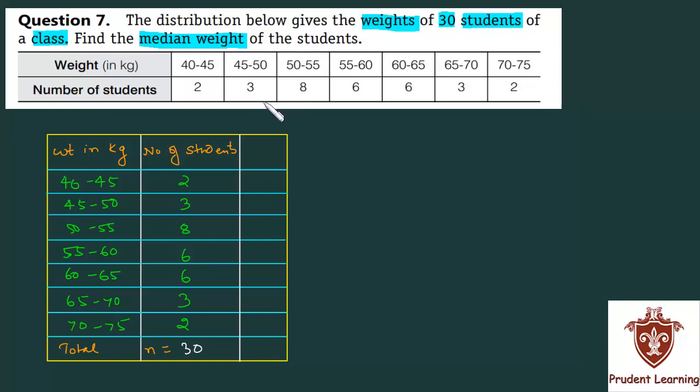For the median, you need the cumulative frequency column. Make that column first. This is 2 as such, 2 plus 3 is 5, 5 plus 8 is 13, 13 plus 6 is 19, 19 plus 6 is 25, 25 plus 3 is 28, and 28 plus 2 is 30. This is your cumulative frequency.